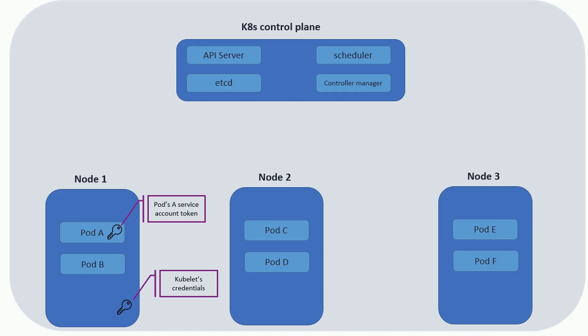The question is: which tools do attackers have to perform lateral movement or cluster takeover? There are two identity types in the cluster. First is the service account of the pod — if attackers have access to pod A, they have access to its service account token. Second is the node's identity used by Kubelet. If attackers escape from the pod to the underlying node, or gain access to the node's file system, they can also use the Kubelet's identity.